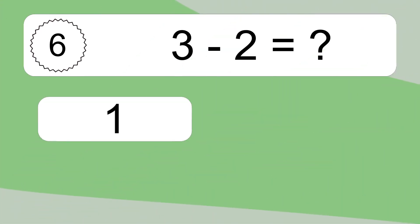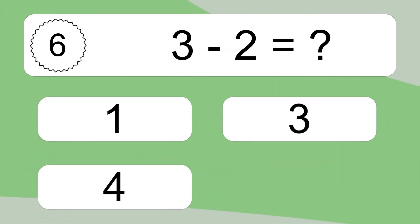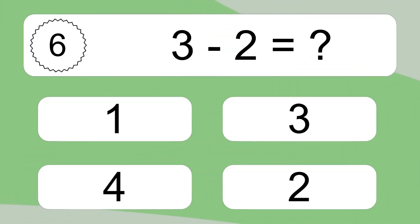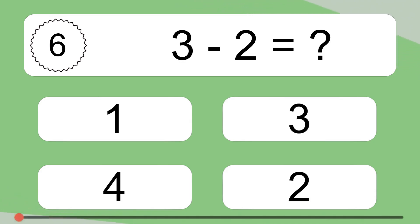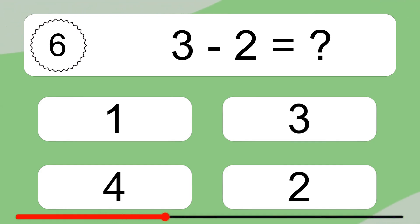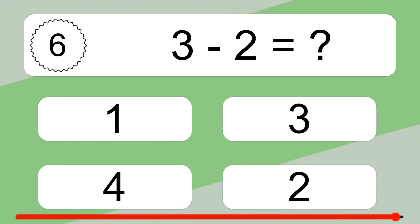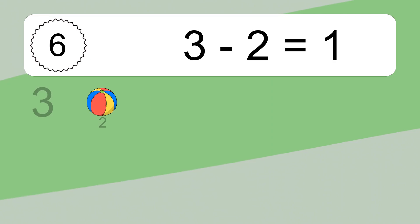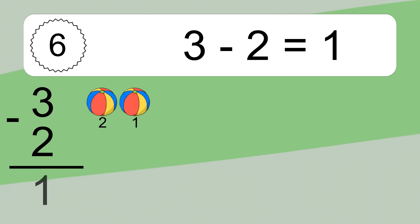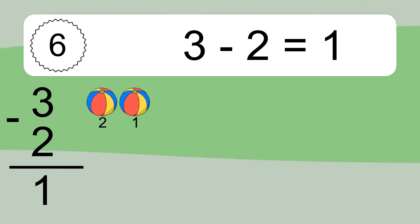3 minus 2 equals what? 3 minus 2 equals 1. Let's count it: 2, 1.